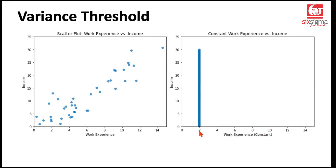But on the right, we have another plot where work experience is constant — it does not vary; everybody seems to have the same work experience. In this case, do you think work experience can be a good predictor of income? Because income is varying but work experience is constant, we can't attribute the variation in income to work experience. Obviously, income seems to be varying because of some other factor. So if a feature is constant, it generally doesn't play a very important role in predicting an outcome.